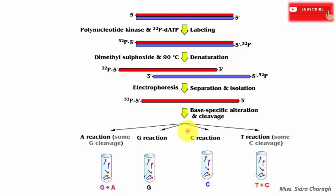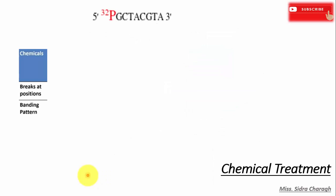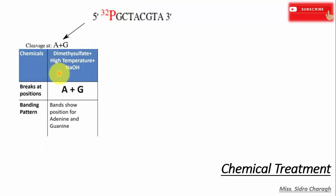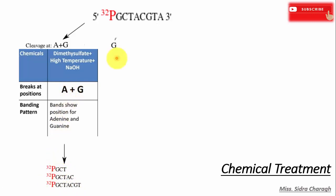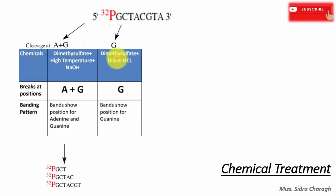For cleavage at specific bases, the radiolabeled single-stranded DNAs are divided into four reactions and given four different chemical treatments, which generate breaks at either one or two nucleotides. When treated with dimethyl sulfate at high temperature using NaOH, it generates breaks at adenine and guanine, producing three different fragments. Treatment with dimethyl sulfate and dilute HCl results in breaks at the G position, producing one fragment.